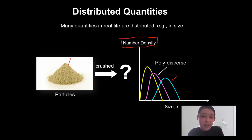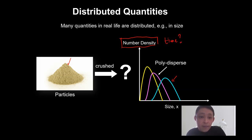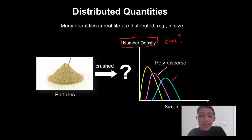So let's say initially the particle number density looks like this. If you put these particles under processing — for example, if you mill or grind them — how does this distribution, or the number density, evolve with time? How does it change with time? This is the question we are going to try to answer using population balance modeling.